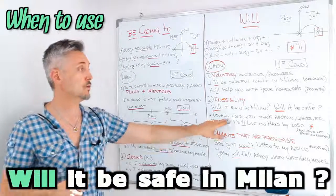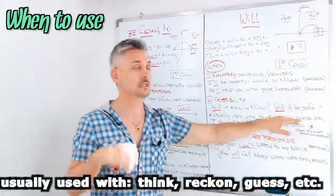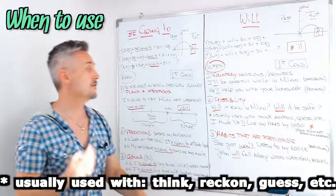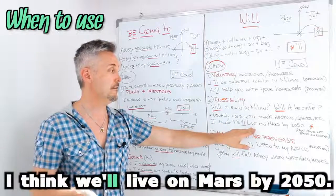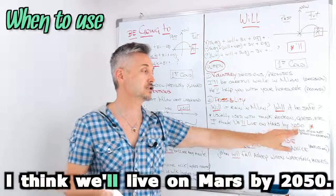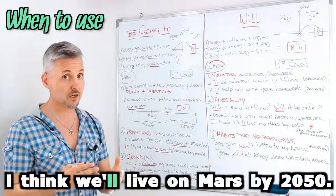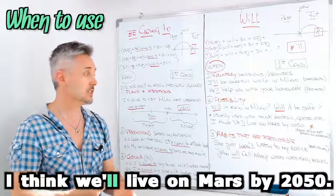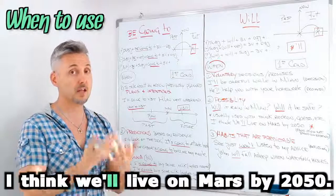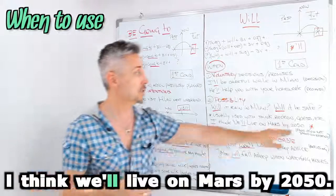Now, usually, it is usually used with think, reckon, guess, etc. For example, I think we will live on Mars by 2050. This is a prediction, but not based on evidence. It's just what I think will happen by 2050.